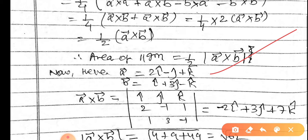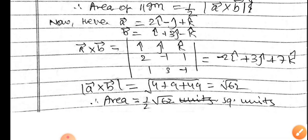The vector equals i... The answer is √62 square units.